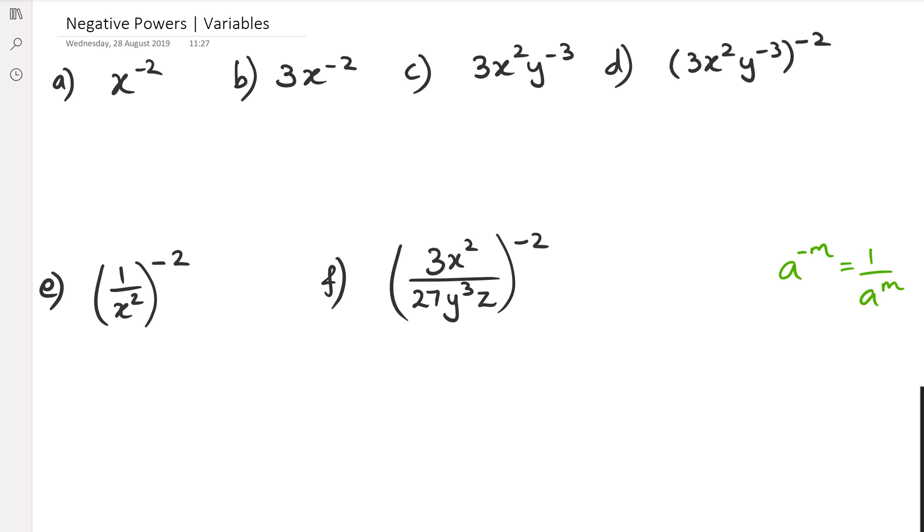Looking at that first question, we've got x to the power of negative 2. Nice and simple, that means this just gets rewritten as 1 over x squared.